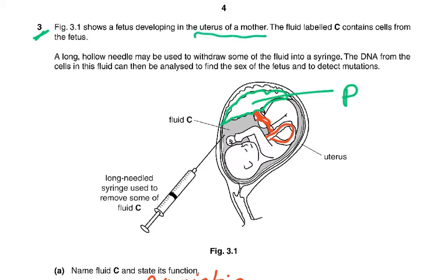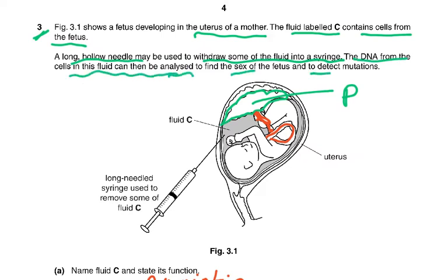Question three: figure 3.1 shows a fetus developing in the uterus of a mother. The fluid labeled C contains cells from the fetus — not from the mother, because the amnion is a closed sac enclosing the fetus. A long hollow needle may be used to withdraw some of the fluid — that is called amniocentesis. The DNA from the fetal cells can be analyzed to find the sex of the fetus and to detect any mutations which might be present.